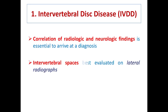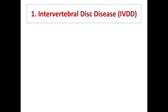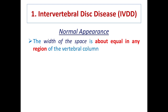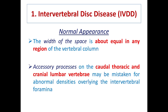On the lateral radiograph, intervertebral spaces are best evaluated. The width of the space between two vertebrae — the intervertebral space — is almost equal in any region of the vertebral column. Accessory processes on the caudal thoracic and cranial lumbar vertebrae may sometimes be mistaken for abnormal densities overlying the intervertebral foramina.